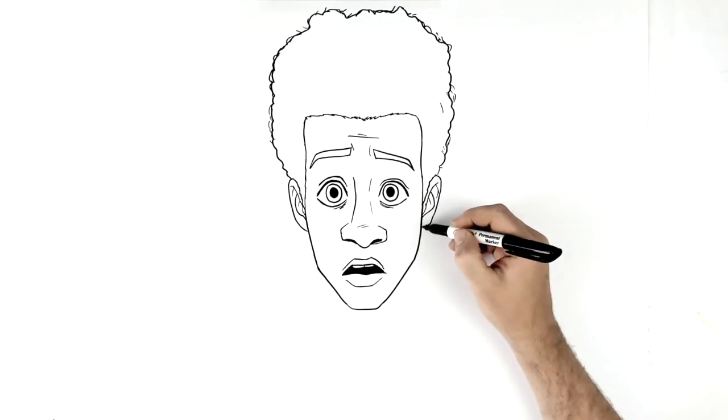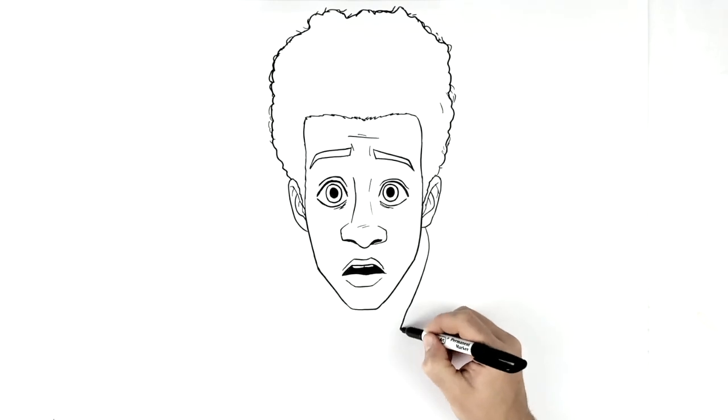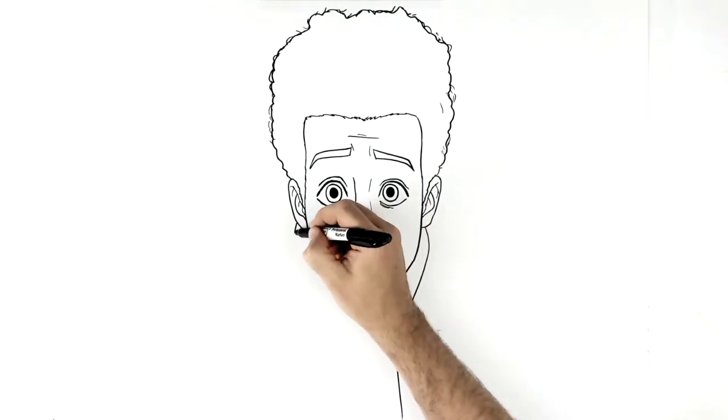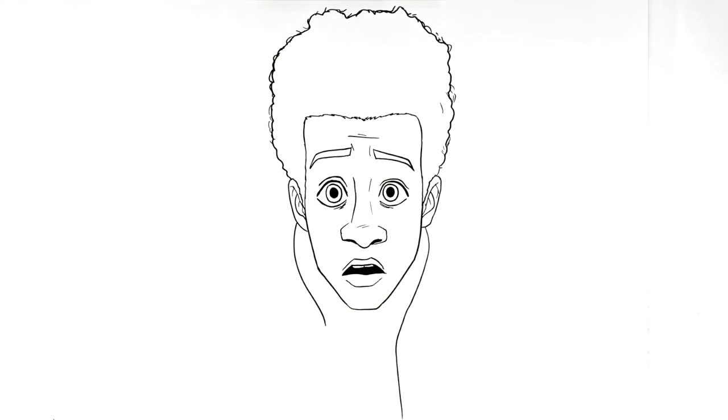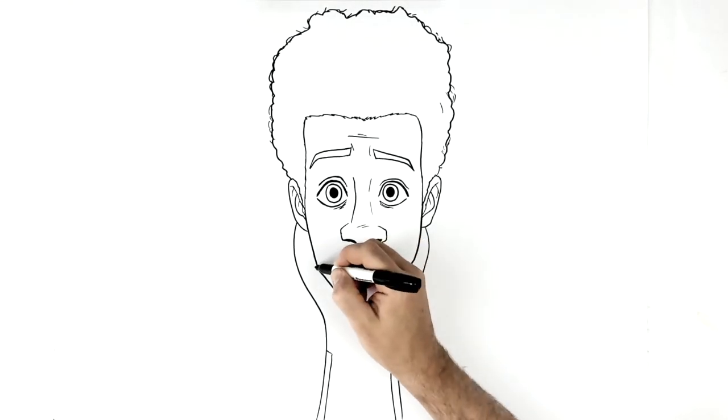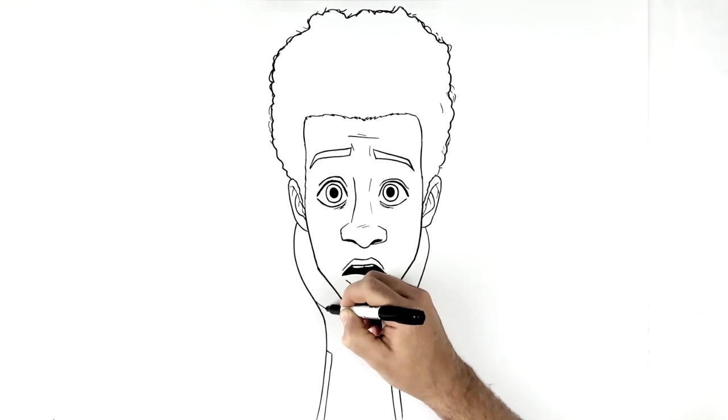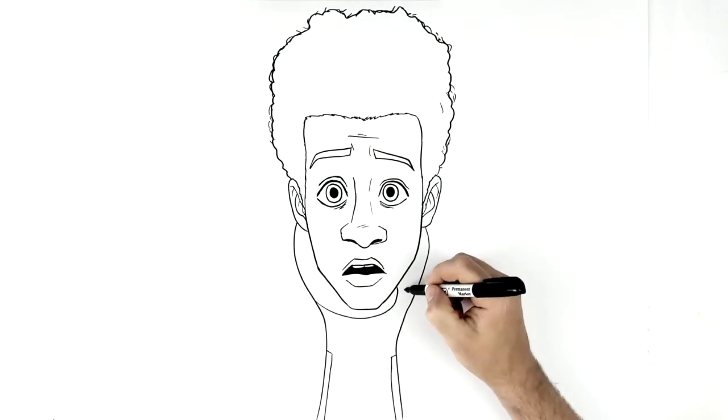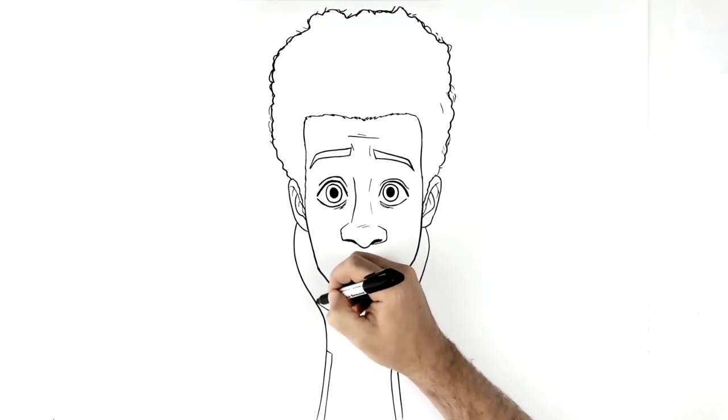Right, so then his hoodie. It just comes down this way, like so. Then there's a bit that sticks out here, probably where it zips together, sticks out like so. Can we see any of his neck? Let's see. A little bit.